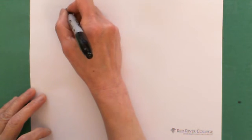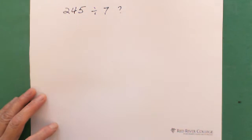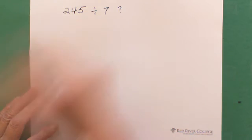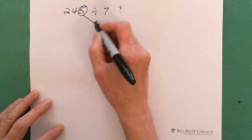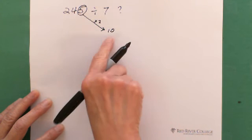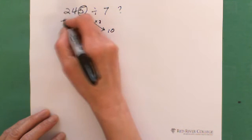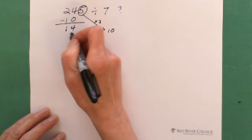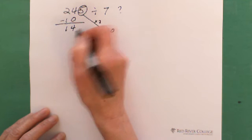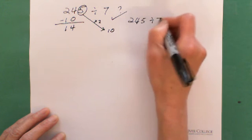If you have a three-digit number, for example 245, to see if it is divisible by 7, I introduce one method: double the one's digit — double means multiply by 2. Subtract the result from the number formed by the rest of the digits. You get 14, and since 14 is divisible by 7, that means 245 is divisible by 7.